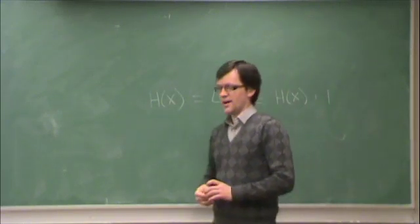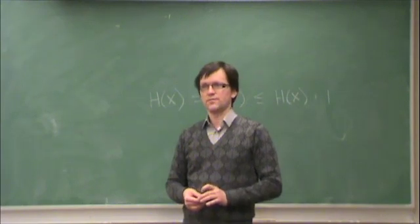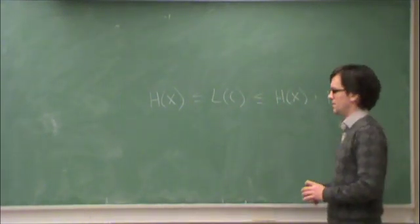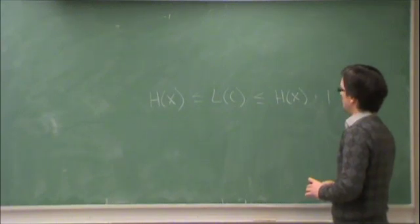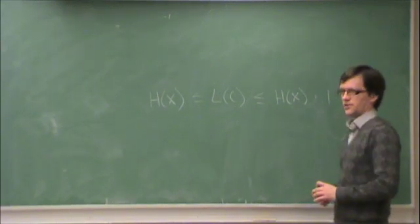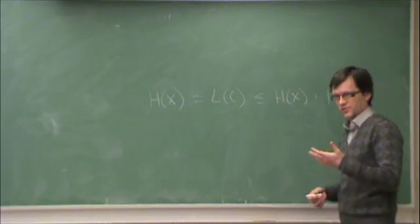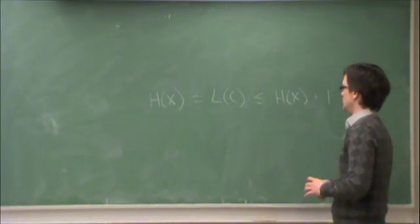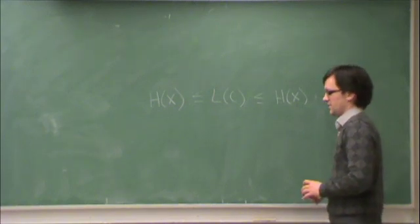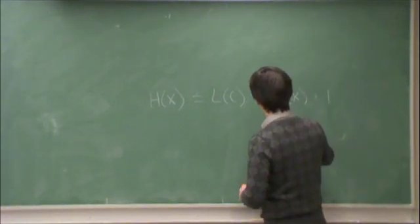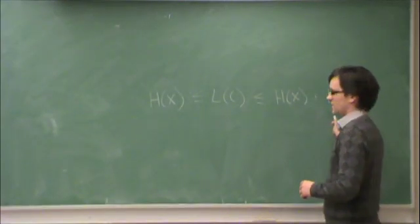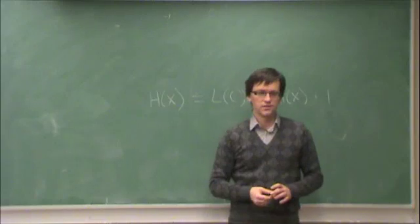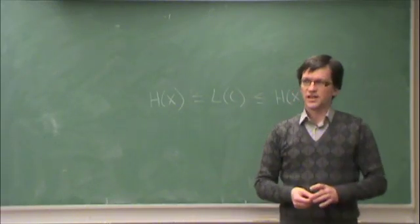We also showed that there exists a prefix code with length entropy plus one bit. In other words, the largest penalty you can possibly have for using a prefix code is one bit. This was a problem for binary sources because you can encode a binary source with one bit. This one-bit penalty is obviously minor if the entropy is large.